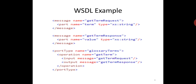This is a simplified fraction of a WSDL document. In this example, the port type element defines 'glossary terms' as the name of a port and 'get term' as the name of an operation. The get term operation has an input message called 'get term request' and an output message called 'get term response.' The message element defines the parts of each message and the associated data types.